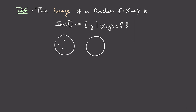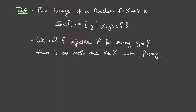If our function maps some points from X to Y with some additional points in Y uncovered, then the image is just the set of points that are mapped to — those with an incoming arrow, shown here in the red-shaded region. We'll now define two properties for functions: injectivity and surjectivity.